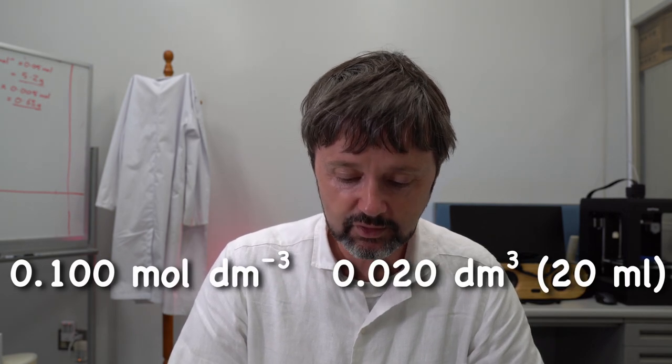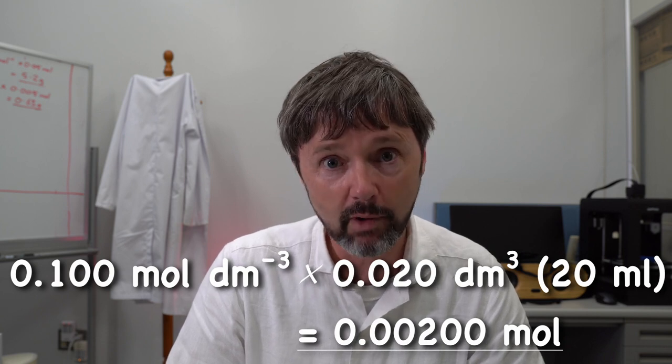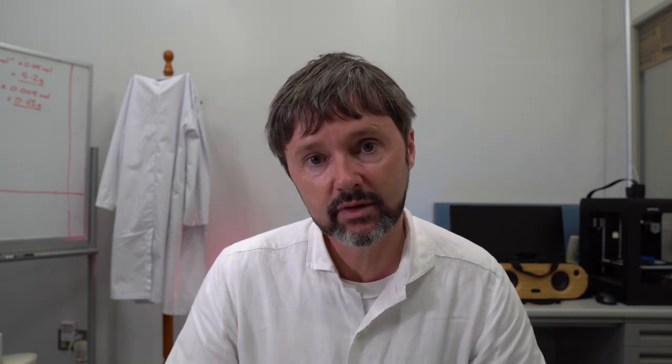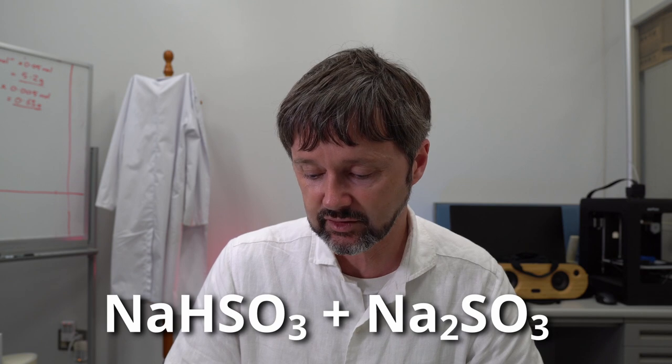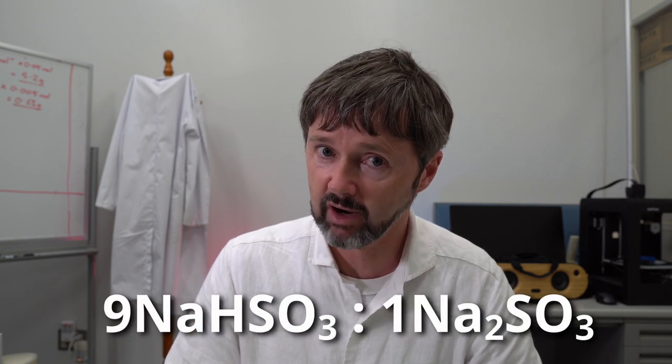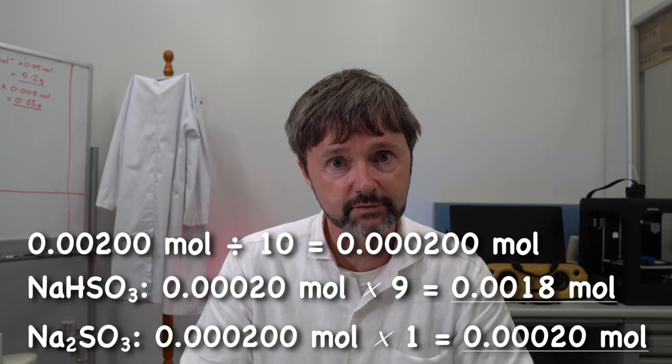So I've got my concentration now, I've got my volume. If I just multiply these two numbers together, that will tell me how many moles of material I want for this experiment. Now this is the total moles for my buffer, so I need to divide this up into my ratio. Remember ratios from primary elementary school? So we've got the number of moles that we want of sodium hydrogen sulfite and sodium sulfite.